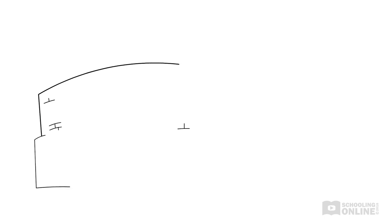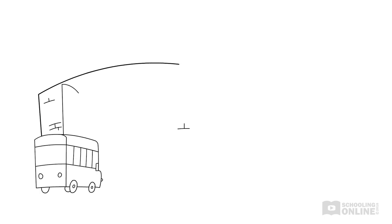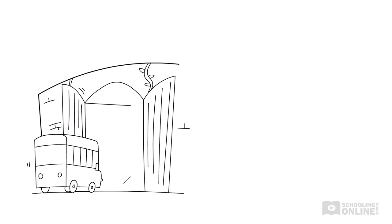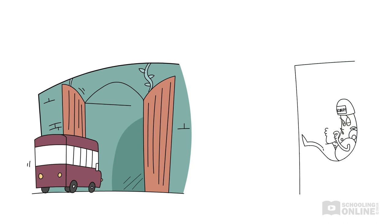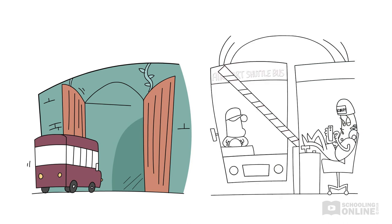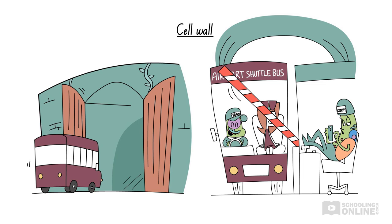Sally's bus from the Eukarytopia airport is just reaching the vine-covered stone walls surrounding the Garden of Babylon. The gates open automatically to let in visitors. The cell wall of a plant cell is similar to the city wall — it forms a rigid barrier that defines the boundaries of the cell, but still allows most substances to enter.